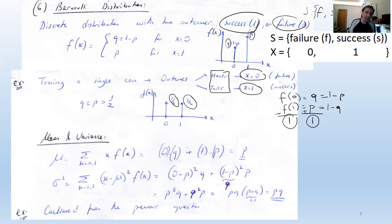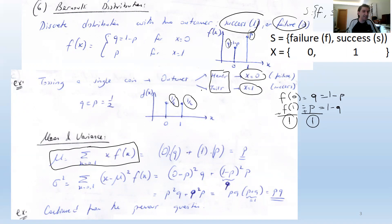Unlike uniform distribution, q and p may take different values in Bernoulli distribution — that is why it is not simply the two-outcome case of uniform distribution. For an unfair coin, the probabilities would not equal 1/2.